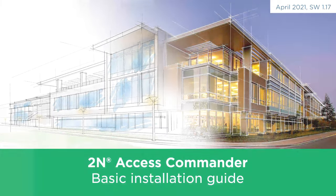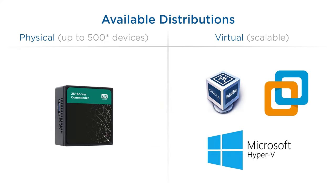Hello and welcome to this tutorial which will guide you through the installation of 2N Access Commander. There are two available distributions. The first one is physical — it's a small computer which comes preloaded with 2N Access Commander and it can handle up to 500 devices.